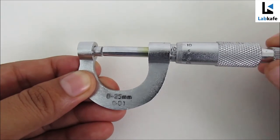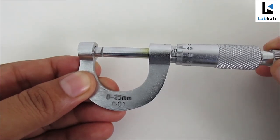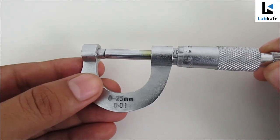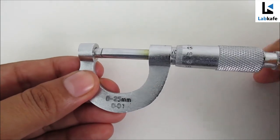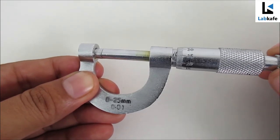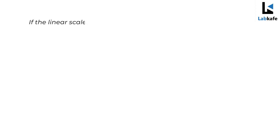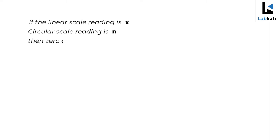To determine the zero error, I will gently rotate the ratchet to bring the spindle in contact with the stud. A click sound will confirm that the stud and spindle are in touch. If the linear scale reading is x and the circular reading is n, then the zero error can be given by ± (x + n × LC).